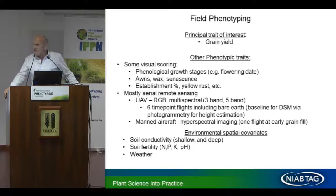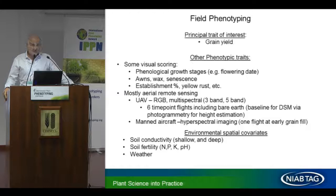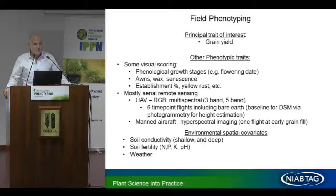The principal trait of interest is grain yield — our bottom line is yield in farmers' fields, and the best we can estimate that is on yield plots in trials. But we're also capturing as many phenotypic descriptors as possible, including visual scoring of phenological growth stages like flowering date, presence or absence of awns, wax, senescence, establishment percent, and incidence of yellow rust. Most of the phenotyping is done by remote aerial sensing using UAV with RGB images and multi-spectral imaging — we worked with two different companies, one with a three-band and another with a five-band camera.